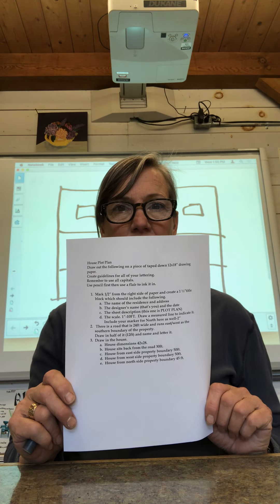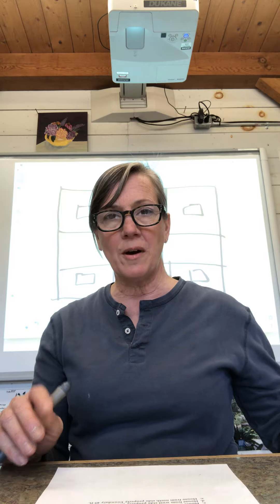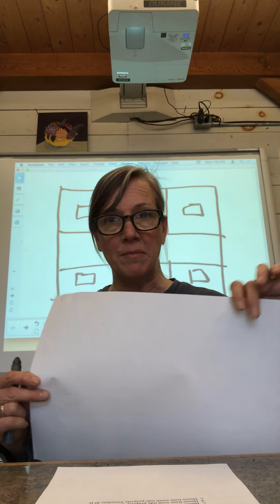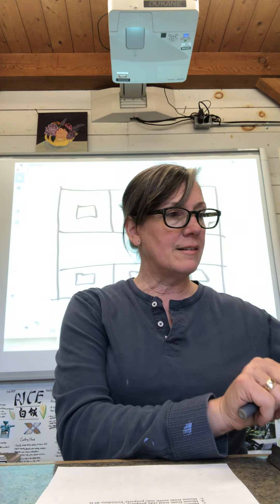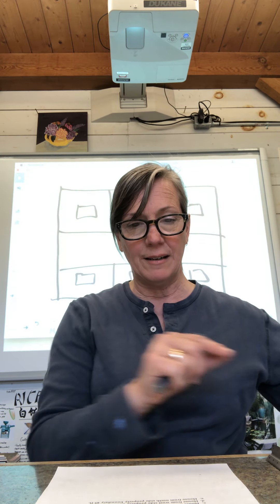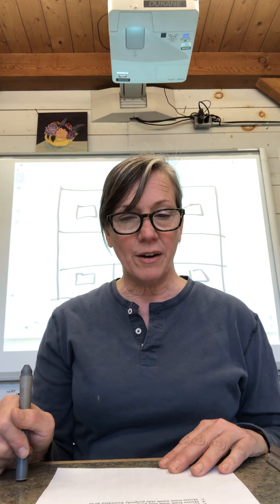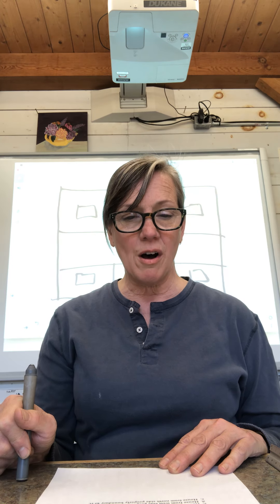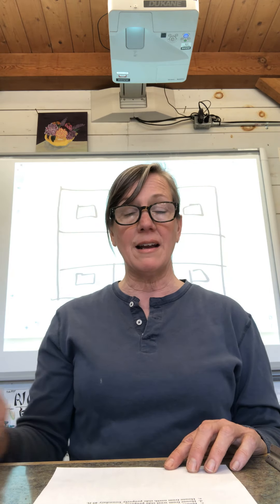We're going to step by step go through the instructions attached to the assignment on Google Classwork and read it together for the plot plan drawing. You're going to take your 12 by 18 inch piece of drawing paper — you should all have some that you brought home from school. You're going to need your engineer scale for sure, a pencil, and some flair pen to ink it in. Remember, you're going to create guidelines for all your lettering and use all capital letters.